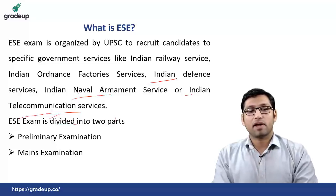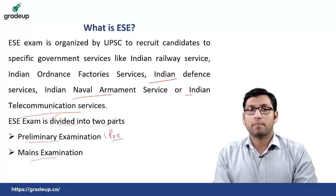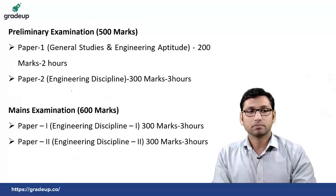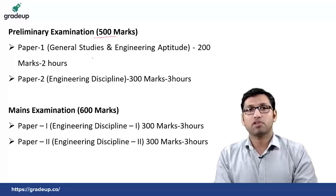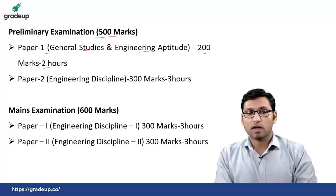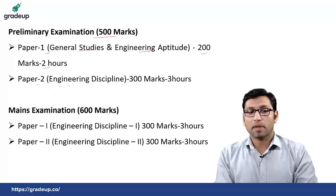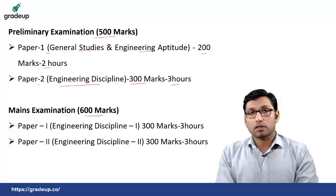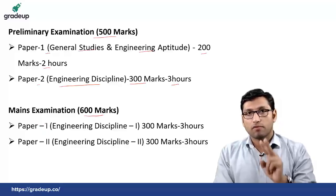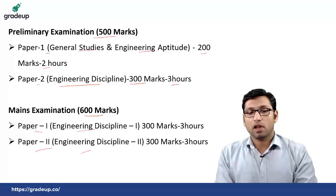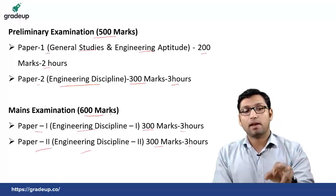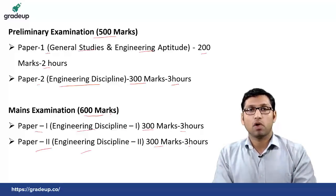This ESE examination is divided into two parts: prelims examination and mains examination. Prelims examination is total of 500 marks in which there are two papers. Paper 1 is of general studies and engineering aptitude, which is of 200 marks and two hours. Paper 2 of prelims examination is from complete engineering discipline, which is of 300 marks in three hours. Mains examination is of total 600 marks and consists of two papers — Paper 1 and Paper 2 of engineering discipline, which is of 300 marks each and three hours each.